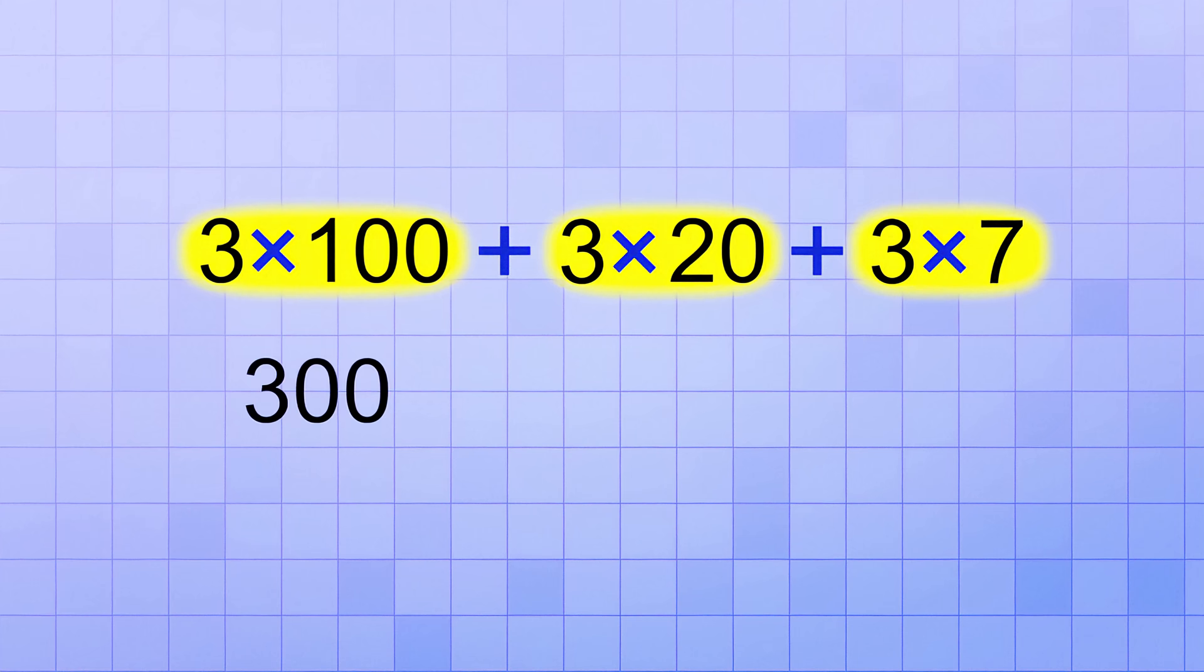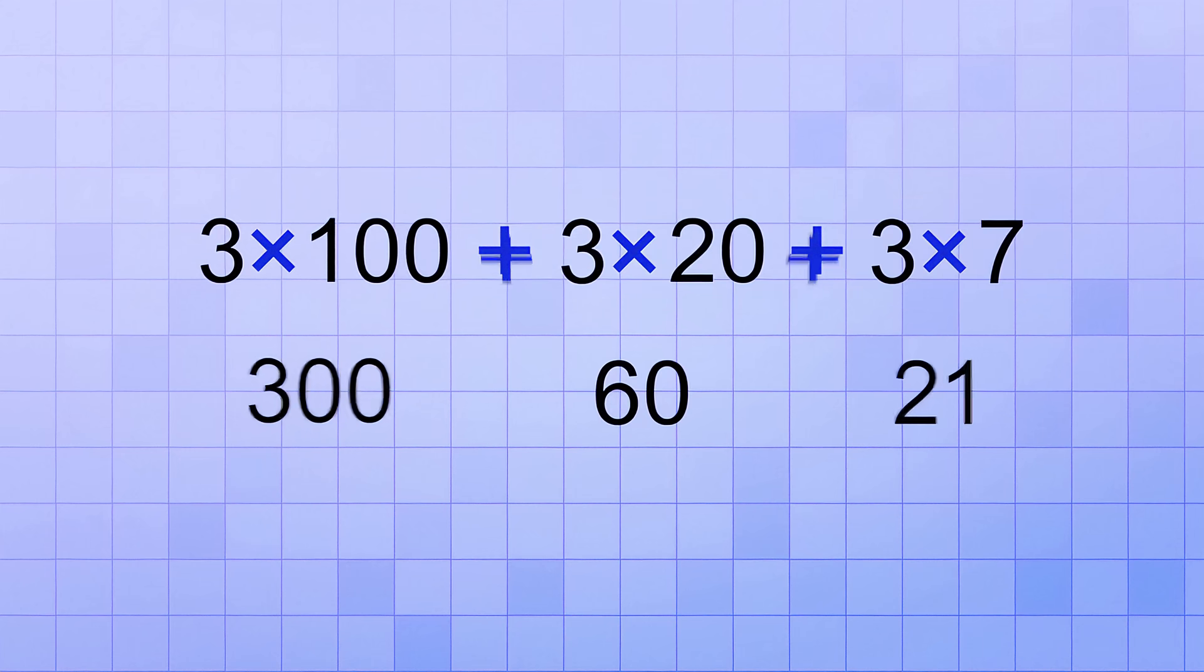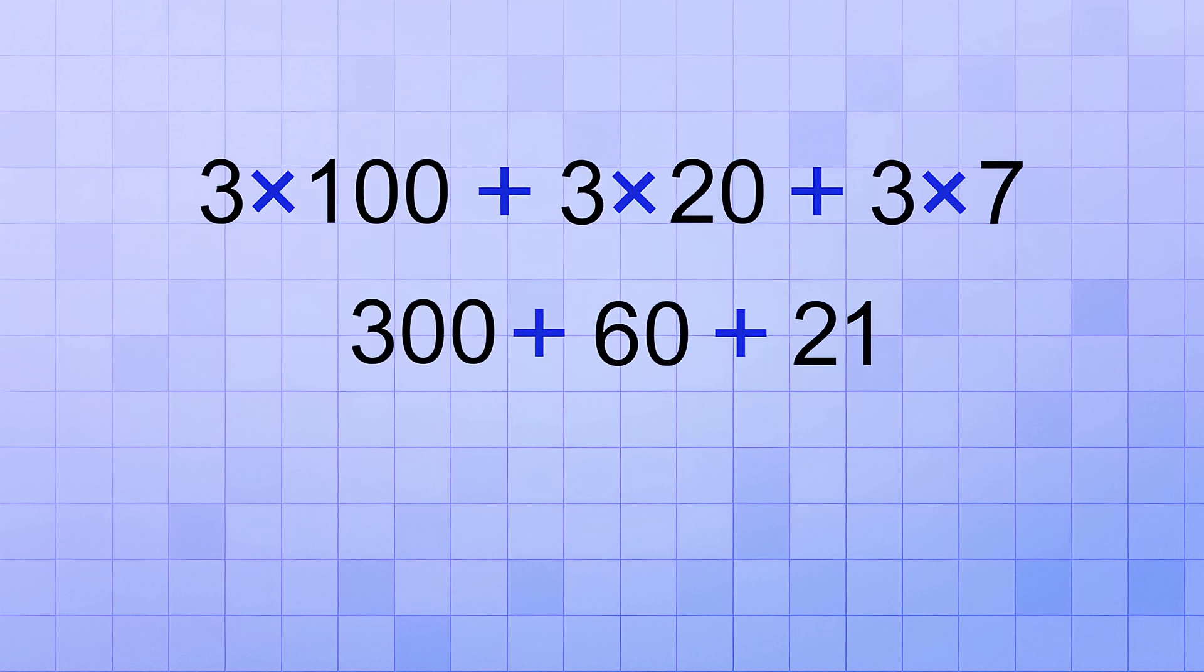That helps because we can do those mentally. 3 times 100 is 300, 3 times 20 is 60, and 3 times 7 is 21. All that's left to do is add those three products up, which is not too hard to do mentally either. 300 plus 60 plus 21 gives us 381 as our final answer.